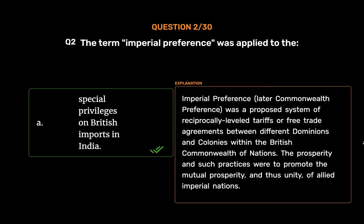Imperial preference, later Commonwealth preference, was a proposed system of reciprocally leveled tariffs or free trade agreements between different dominions and colonies within the British Commonwealth of Nations. The prosperity and such practices were to promote the mutual prosperity, and thus unity, of allied imperial nations.